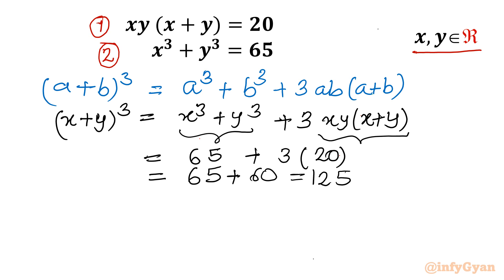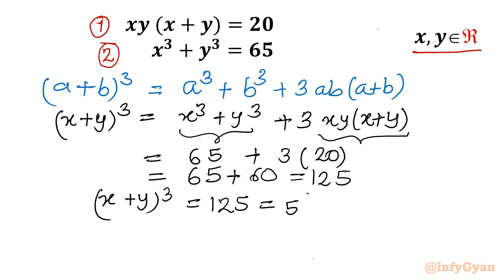So (x + y)³ = 125, which we can also write as 5³. Since the exponents are the same, the bases must be equal, so x + y = 5.